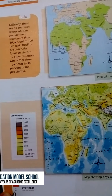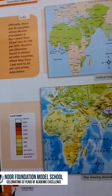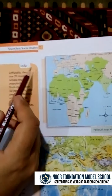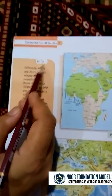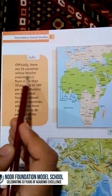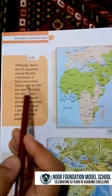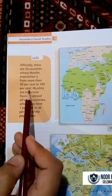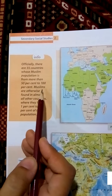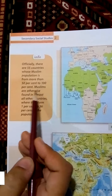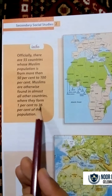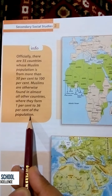Okay students, this is the second page. There is some information given in the sidebar. Let's read it. Officially there are 55 countries whose Muslim population is from more than 50% to 100%. Muslims are otherwise found in almost all other countries where they form 1% to 36% of the population.